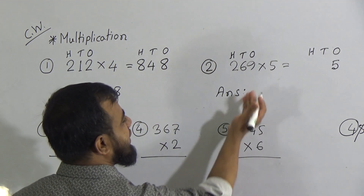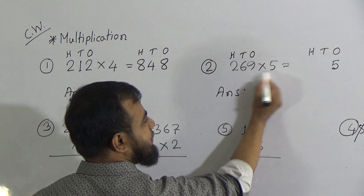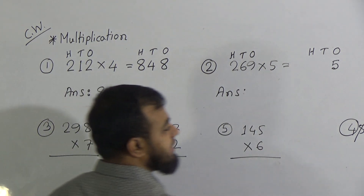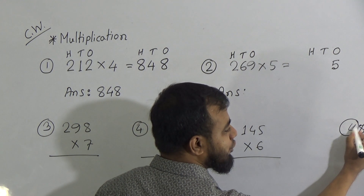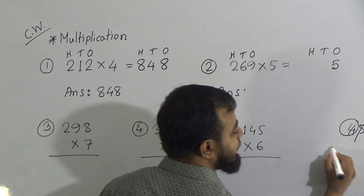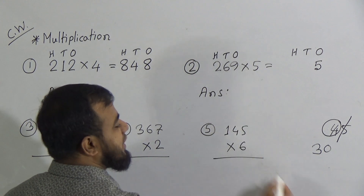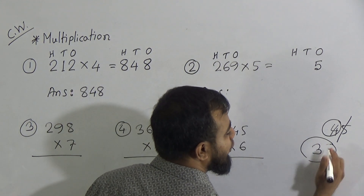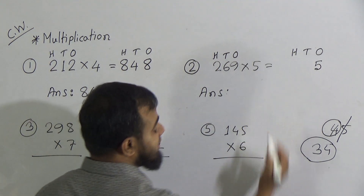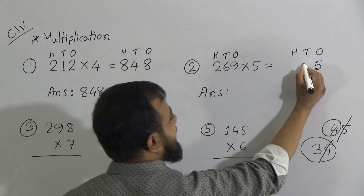Now we multiply the 10's place with 5. 5 6's are 30. 30 and the carried 4 makes 34. In the 10's place there is only 1 digit, so we write the right-side digit, 4, of 34 in the 10's place. The 3 is carrying in our hand.